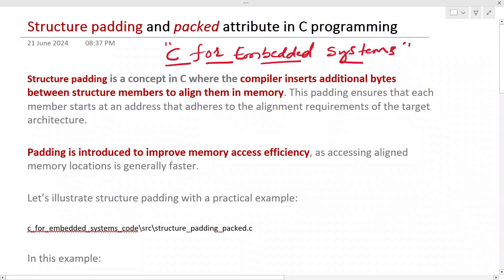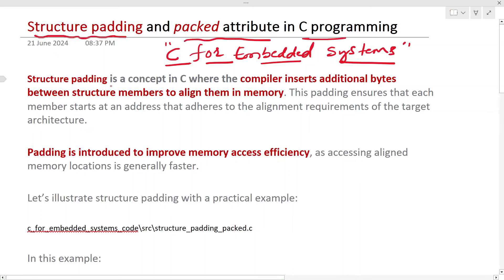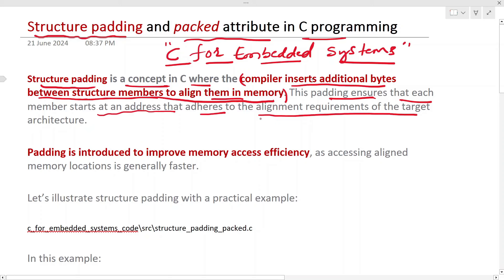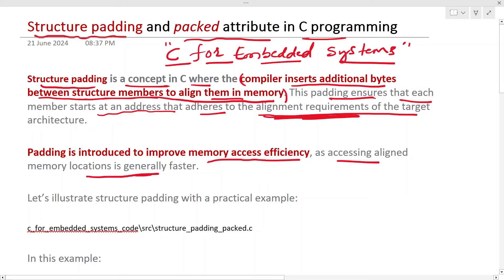This is a series on C for embedded systems. In the previous video we looked at structures in C programming. In this video, let's look at structure padding and the packed attribute in C programming. Structure padding is a concept in C where the compiler inserts additional bytes between structure members to align them in memory. This padding ensures that each member starts at an address that adheres to the alignment requirement of the architecture, improving memory access efficiency.